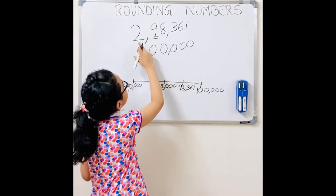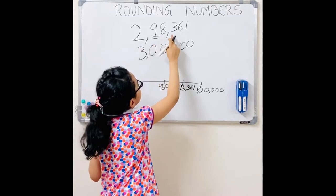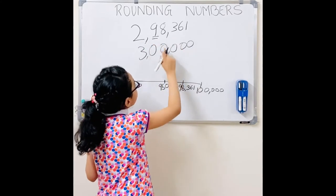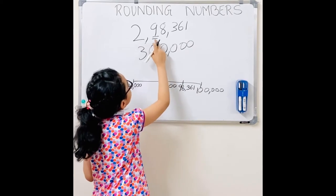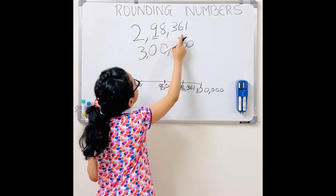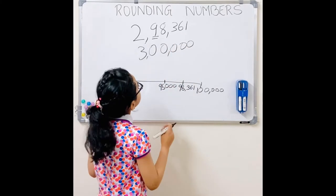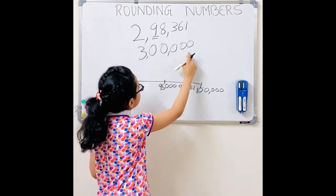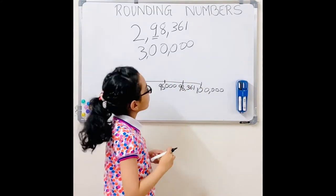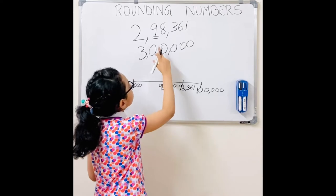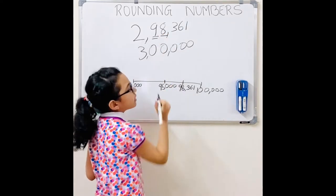We add it to this 298,361 and we get 300,000. We don't get 2,108,361 — that would be wrong. So instead we get 300,000. Here's another trick where you don't have to use the number line.